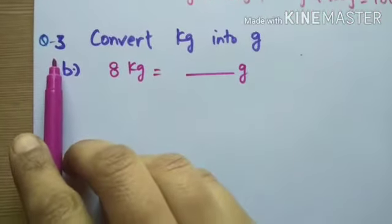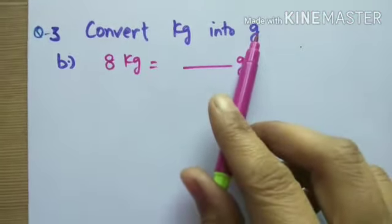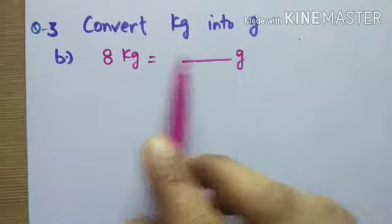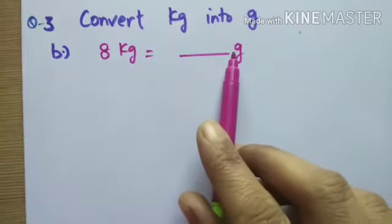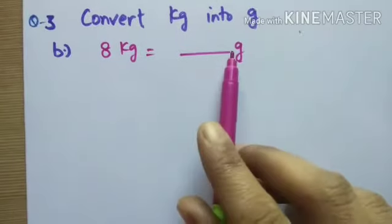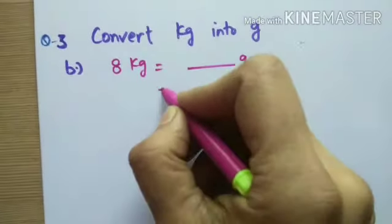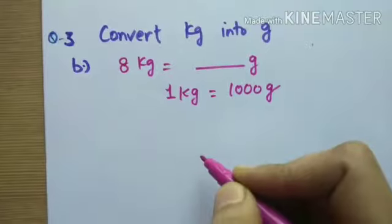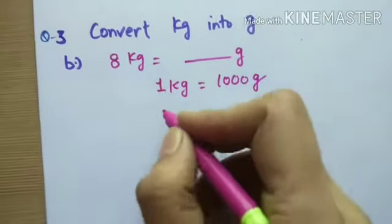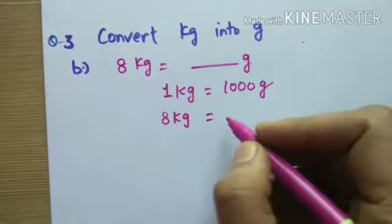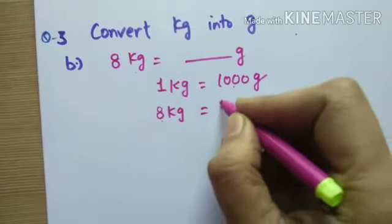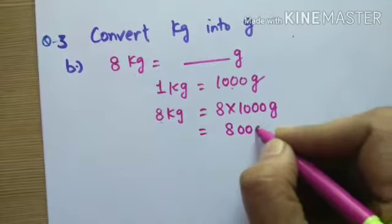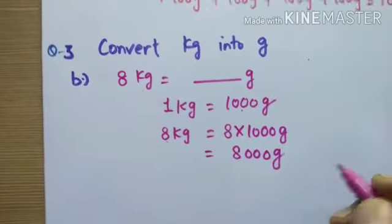Question number three: convert kilograms into grams. Let's take part B — 8 kg equals how many grams? When we convert a bigger unit into a smaller unit, we multiply. One kg equals one thousand grams, so 8 kg equals 8 multiplied by one thousand, which equals eight thousand grams.